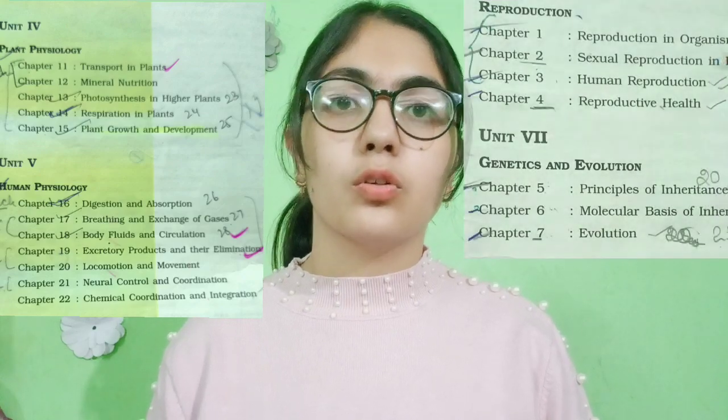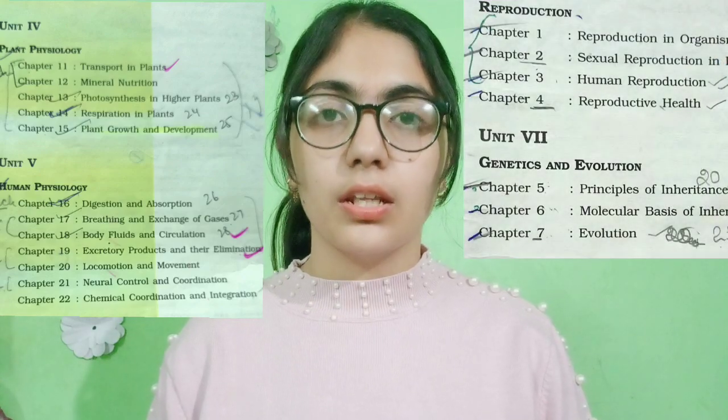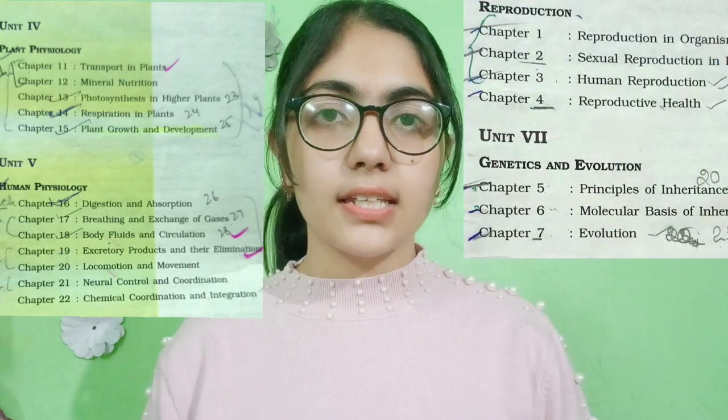There are two types of units: concept-based and fact-based. Concept-based units include plant physiology, human physiology, reproduction, genetics, and evolution. Let's discuss how to extract and retain maximum information from a concept-based chapter.